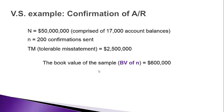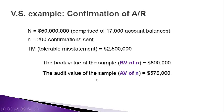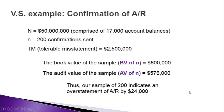Let's assume that the 200 confirmations came back. The book value of the sample — those 200 accounts — equaled $600,000, so we sampled $600,000 of the $50 million. We reviewed the confirmations and determined the audit value of those 200 confirmations is $576,000. There were some mistakes, and after verifying them, the sample shows a misstatement of $24,000 — meaning the book value is overstated by $24,000.